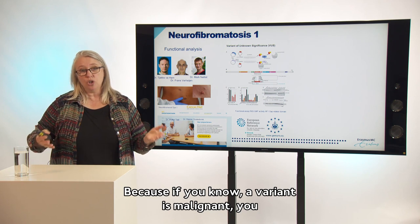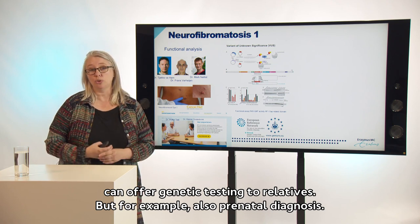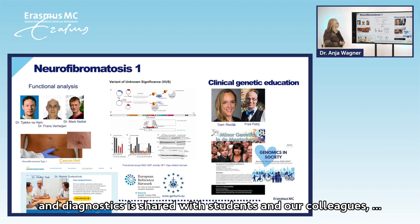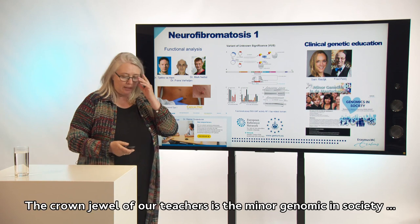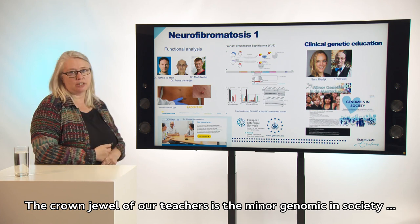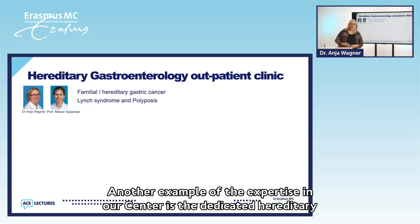If you know a variant is malignant, you can offer genetic testing to relatives, but also for example prenatal diagnosis. All these skills regarding counseling and this knowledge on genetic techniques and diagnostics is shared with students and colleagues by dedicated educational specialists. The crown jewel of our teachers is the minor Genomics in Society, which is now being transferred to a research master Genomics in Society.